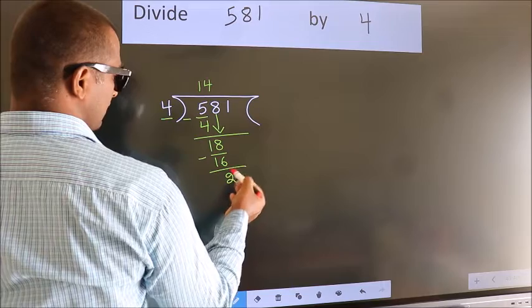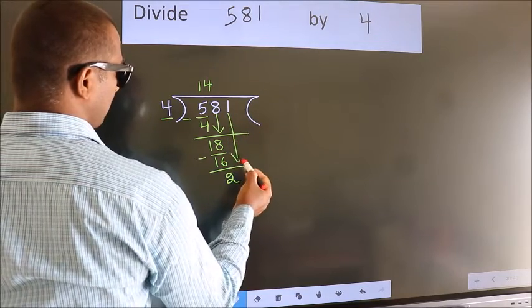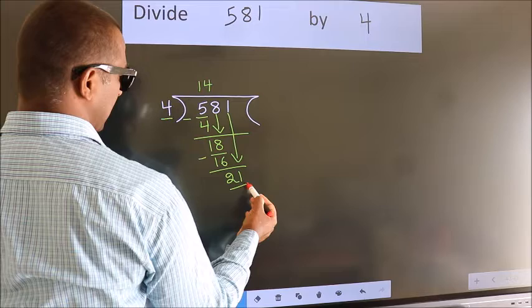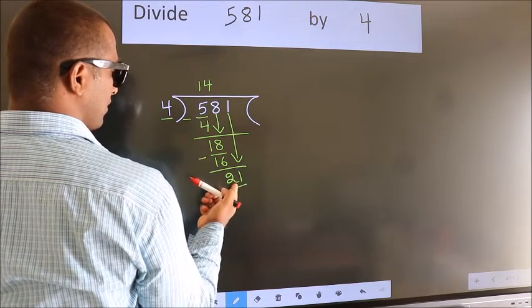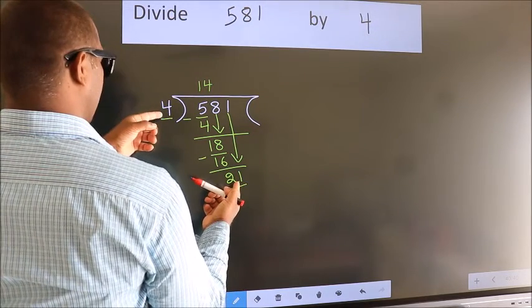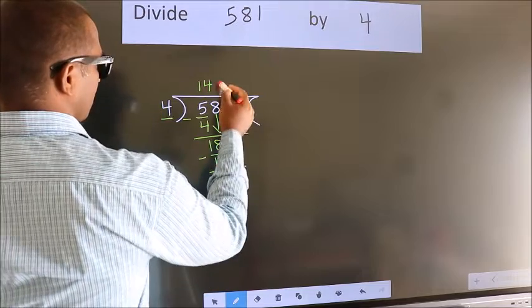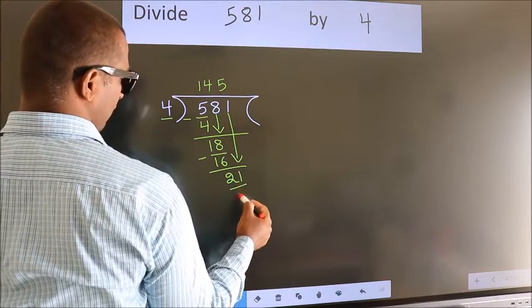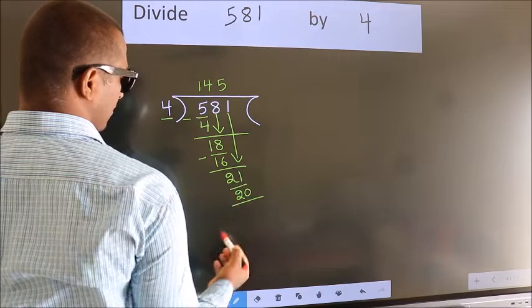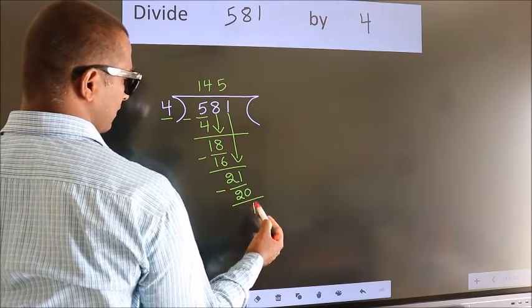After this, bring down the beside number. So 1 down. So 21. A number close to 21 in the 4 table is 4 fives 20. Now we subtract, we get 1.